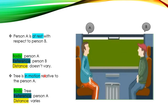The tree is in motion relative to person A. The body here is the tree, and the reference is person A — the word after 'relative to'. The distance between the tree and person A varies since the train is moving. So the tree is in motion relative to person A. To describe the motion of a body, we specify the body, the reference, and the distance. If the distance varies, the body is in motion; if the distance does not vary, the body is at rest.